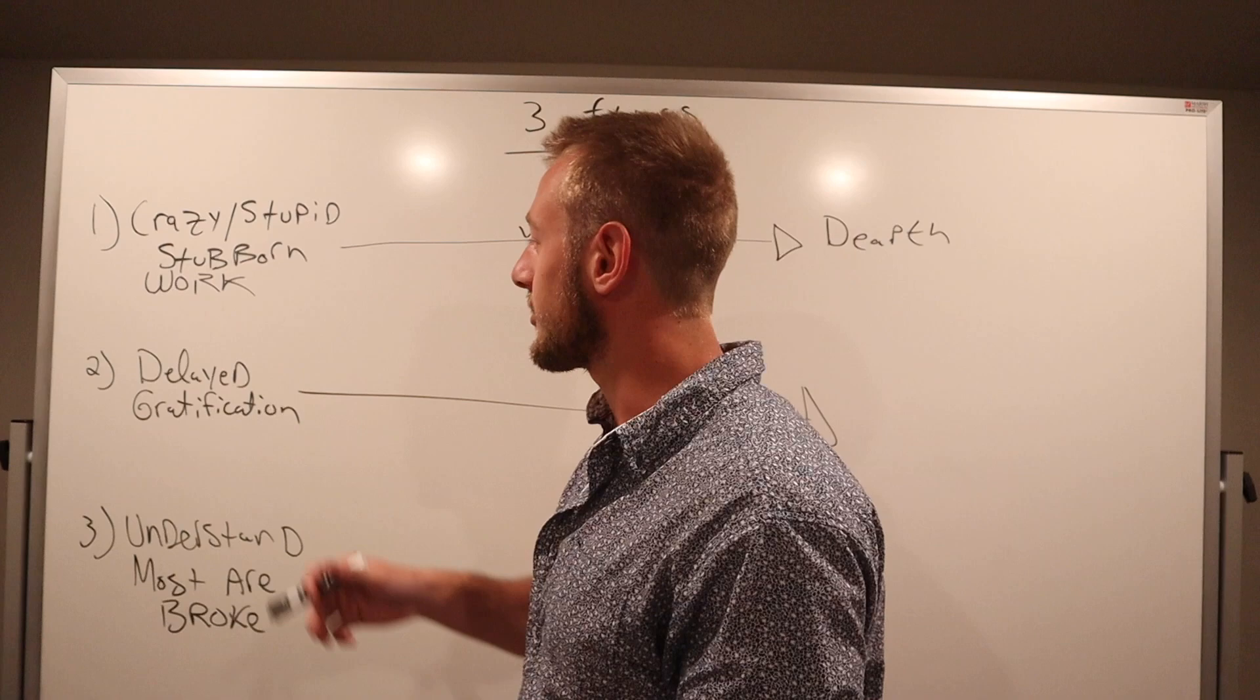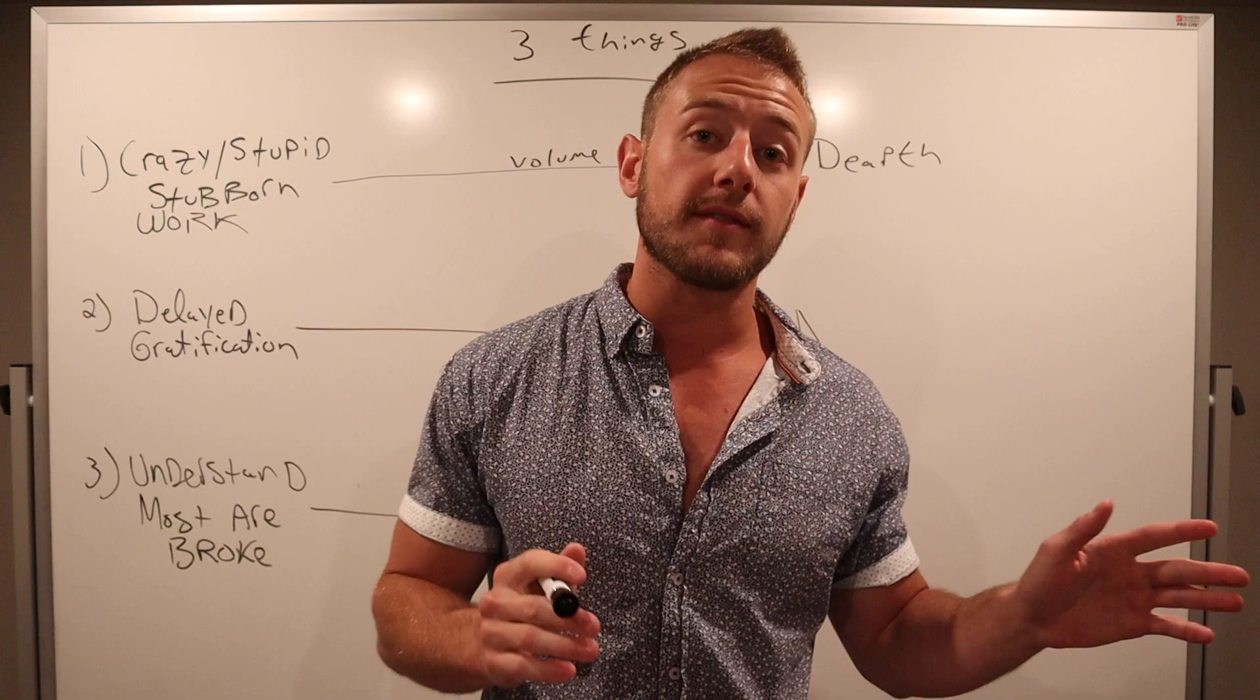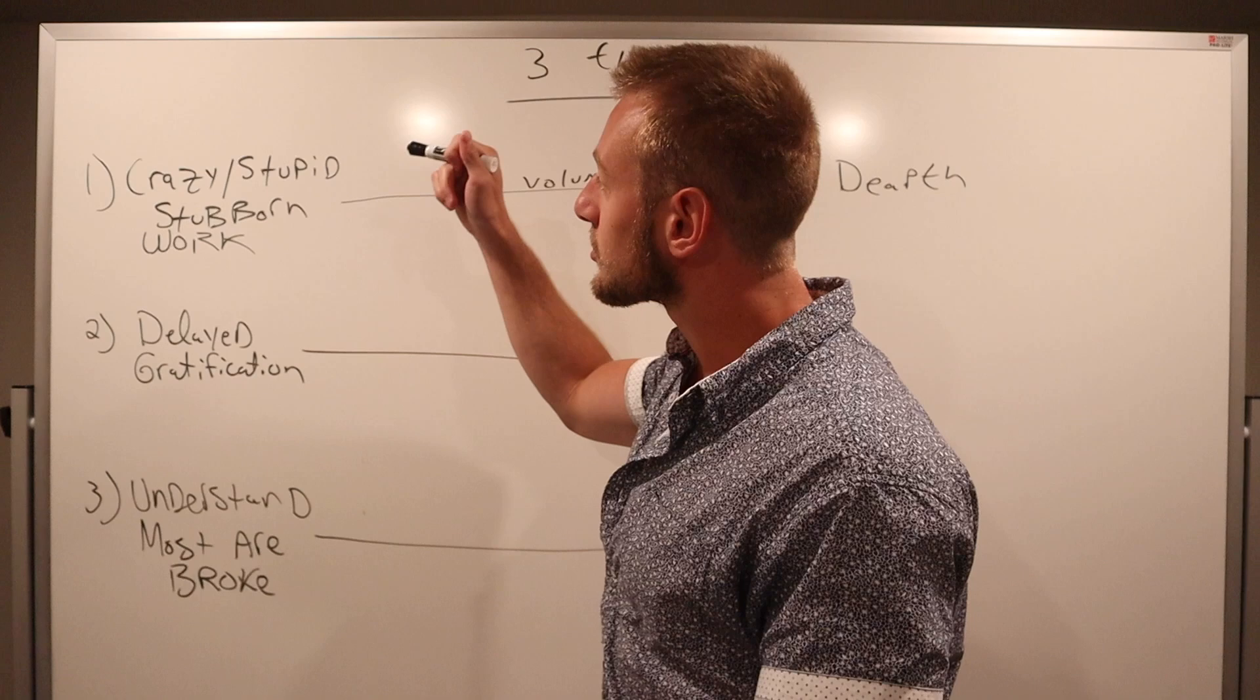There are three specific things we have to teach and three specific agreements we have to come by. If you do not follow these to a T, there is no way in hell you're going to have the level of success you want. You're going to be tied to doing things you don't want to do. The very first thing you have to have is crazy, stupid, stubborn work ethic.